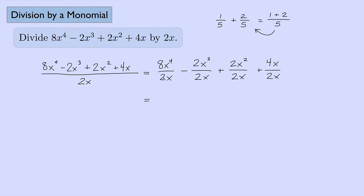Now we look at each term individually. Eight divided by two is four, and x to the fourth divided by x gives x to the third. Two divided by two is one (we don't write the one), and x cubed divided by x gives x squared. Two divided by two is one again, and x squared divided by x gives x to the first. Finally, four divided by two is two, and x divided by x cancels — those go away. So the answer is four x cubed minus x squared plus x plus two.